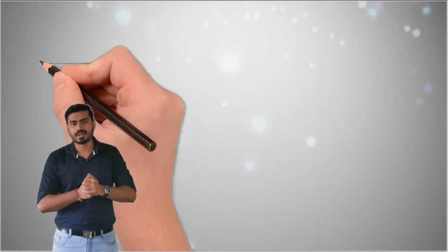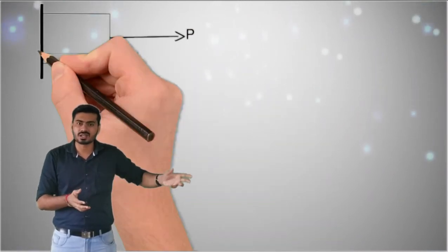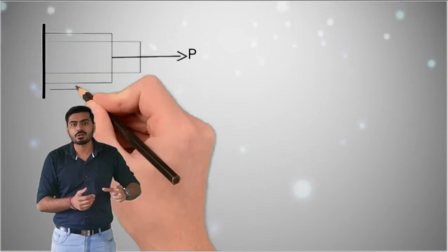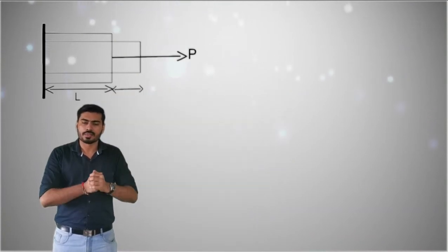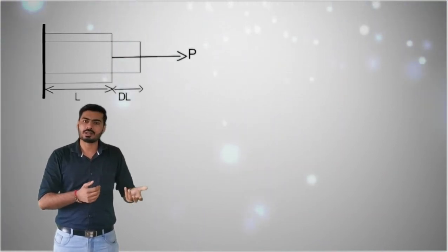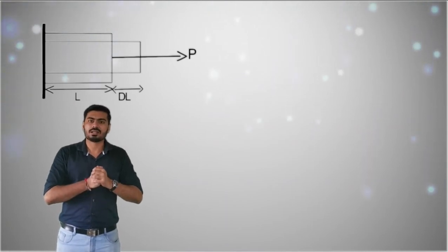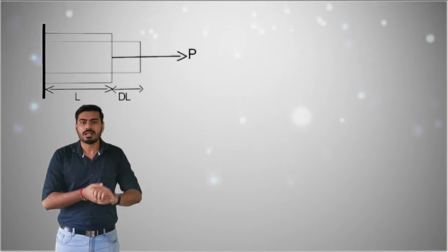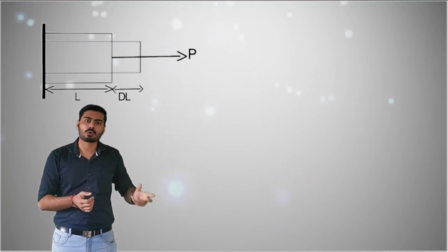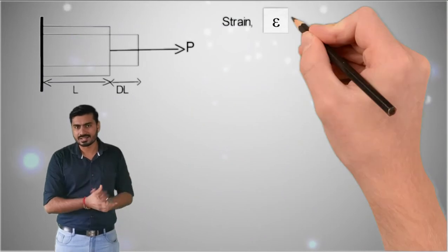Next we define another important term — strain. Consider a body fixed at one end and subjected to an externally applied tensile load P on the other end. The tensile force tries to elongate the body. Initially the length of the body was L, and after elongation the change in length is ΔL. The ratio of change in length to original length gives the strain. Strain is represented by epsilon (ε), so the formula is ε = ΔL/L.